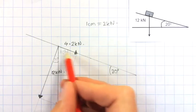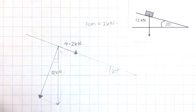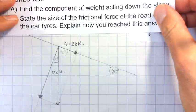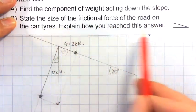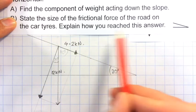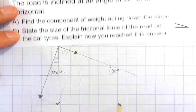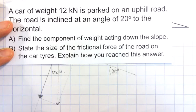So, 4.2 kN is the component down the slope. And then the last bit of the question said, state the size of the frictional force of the road on the car tires, explain how you reached this answer. Now, an important point here is if we look back earlier in the question, that the car was parked, and therefore it is stationary, it's not accelerating.